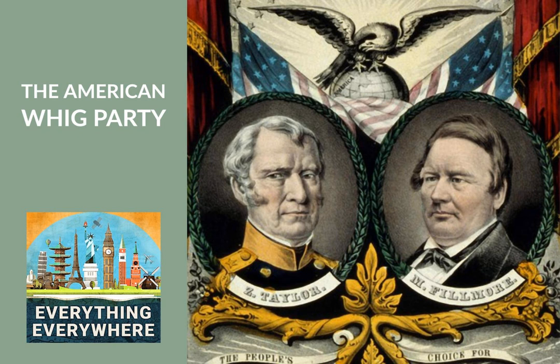The 1820s were an important time in American history. By the time of the 1820 election, the Federalist Party had completely fallen apart. President James Monroe literally ran unopposed for president. In 1824, all four candidates for president who received electoral votes came from the same party, the Democratic-Republican Party. After this election, the Democratic-Republican Party too fell apart, and they were replaced by the Democratic Party, which was led by Andrew Jackson.